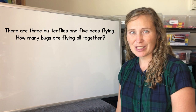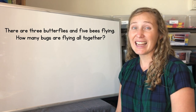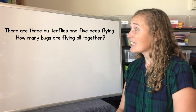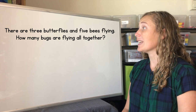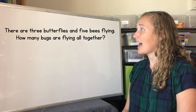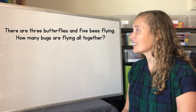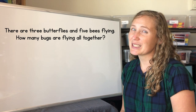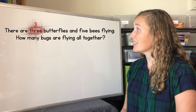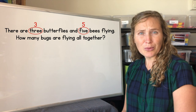Let's start with the words and draw a picture to help us find the answer to the addition story. Let's read it together. There are three butterflies and five bees flying. How many bugs are flying all together? Let's start by circling the numbers. Three butterflies and five. We have two different numbers.